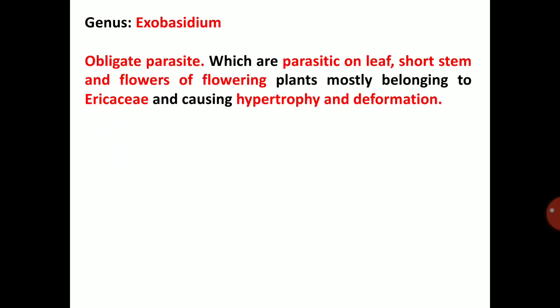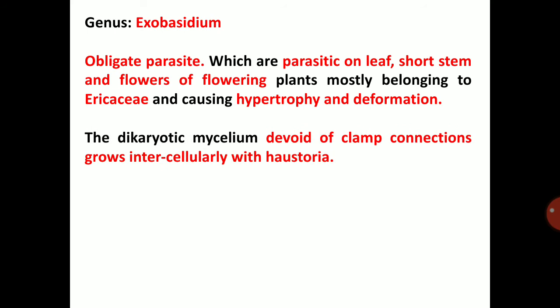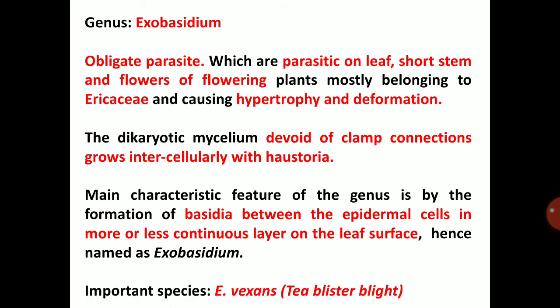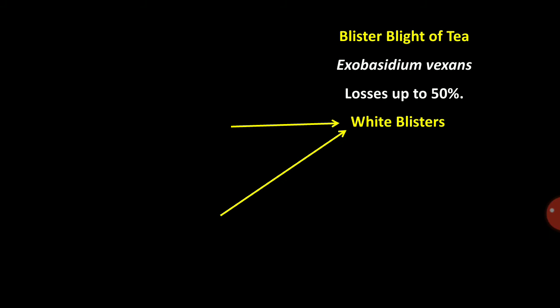Genus Exobasidium general characters: the fungi under Exobasidium are obligate parasites, parasitic on leaf, short stem, and flowers of flowering plants mostly belonging to Ericaceae, causing hypertrophy and deformation. The main symptom of Exobasidium is hypertrophy and deformation of leaves. The dikaryotic mycelium, devoid of clamp connections, grows intercellularly with haustoria. The main characteristic feature of this genus is the formation of basidia between the epidermal cells in a more or less continuous layer on the leaf surface — hence named as Exobasidium. Important species: Exobasidium vexans causes tea blister blight, causing losses up to 50 percent.